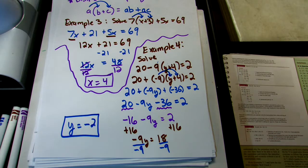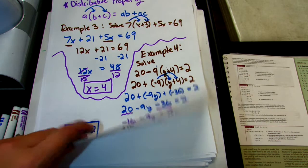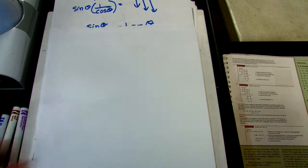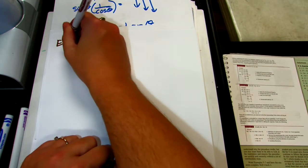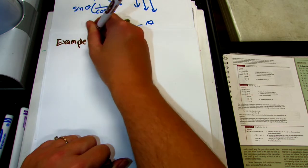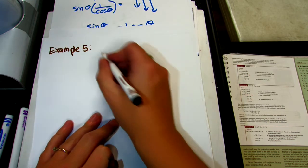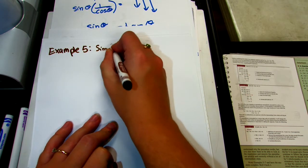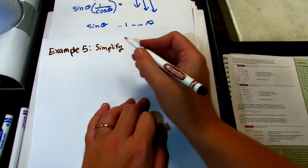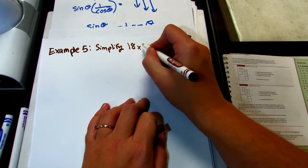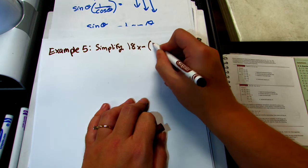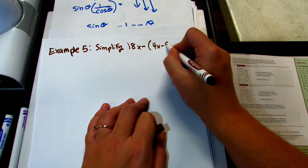Let's do another one of those because that looks a little complicated. This time, let's just simplify an expression — we're not going to solve. Example 5: simplify 18x minus the quantity 4x minus 9.